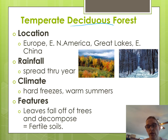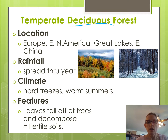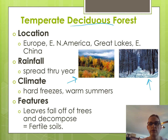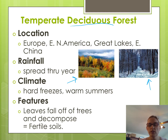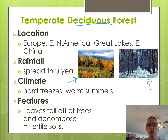For the temperate deciduous forest, the rain is spread throughout the year. The leaves fall off the trees, and then you have a lot of trees without leaves for the winter. You also have hard freezes in winter and then warm, hot, humid summers. This biome has good fertile soils because of the decomposing leaves and a dormant season — the leaves fall, decompose over winter, and leave behind fertile soil by spring.